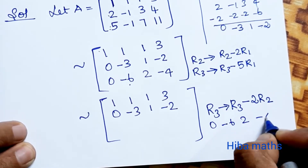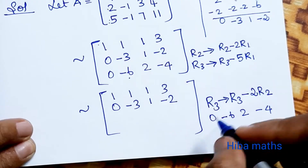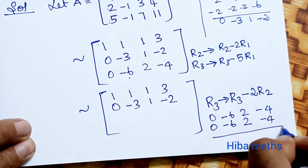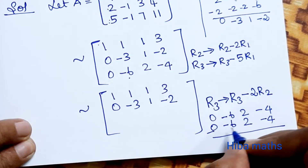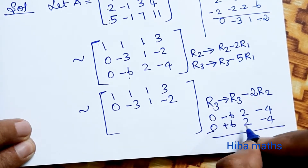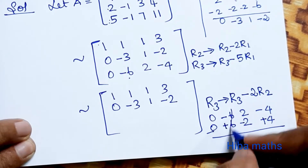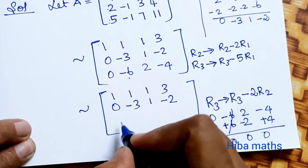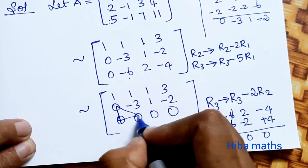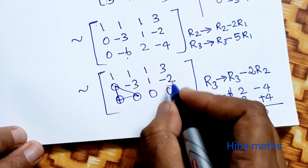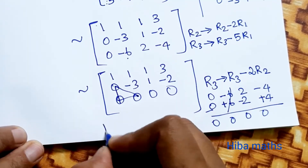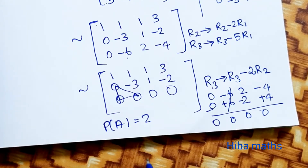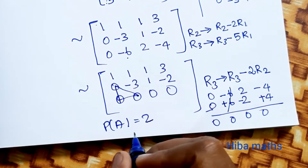R3 is [0, -6, 2, -4]. R2 into 2 gives [0, -6, 2, -4]. Subtracting: minus minus gives plus, plus gives minus, minus gives plus. The result is 0, 0, 0, 0. The last row is all zeros. So the matrix is in row echelon form and the number of non-zero rows determines the rank.